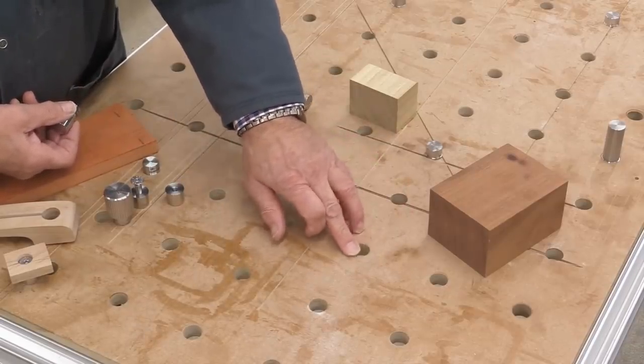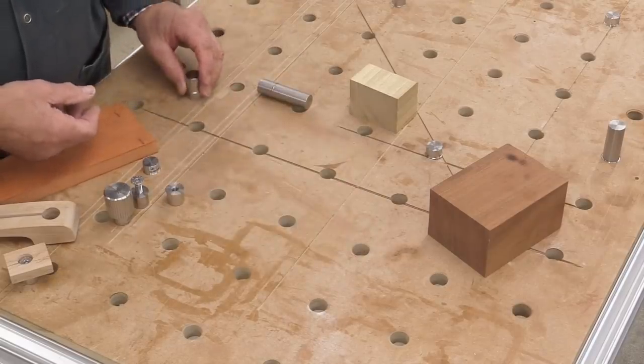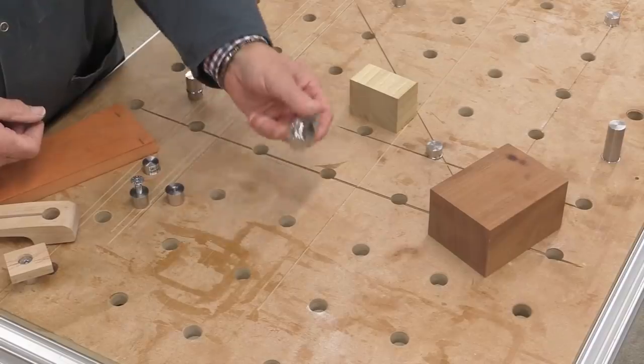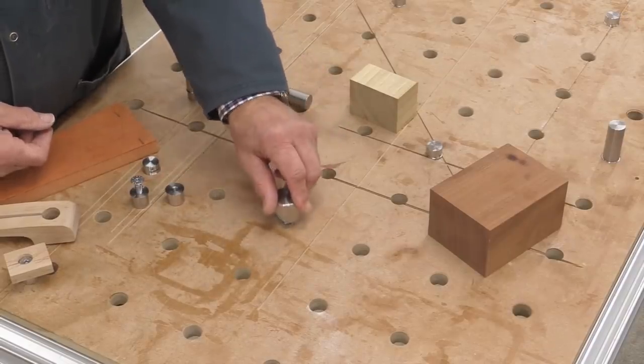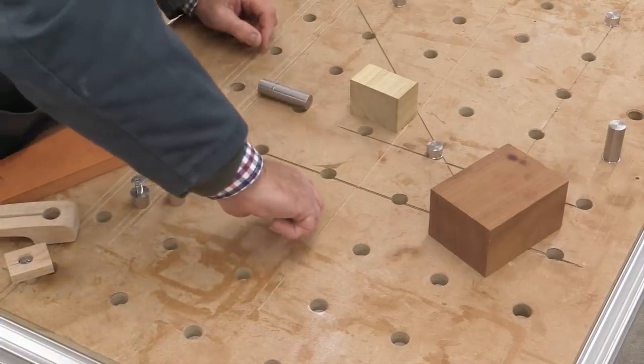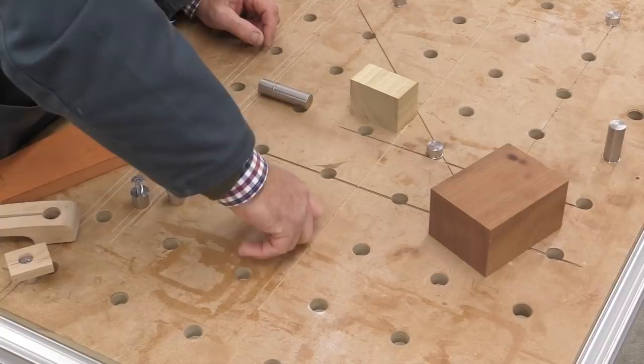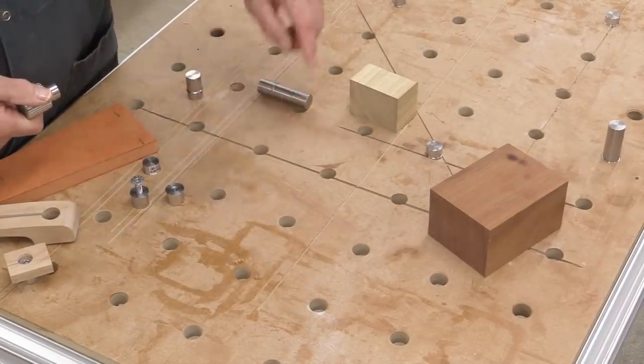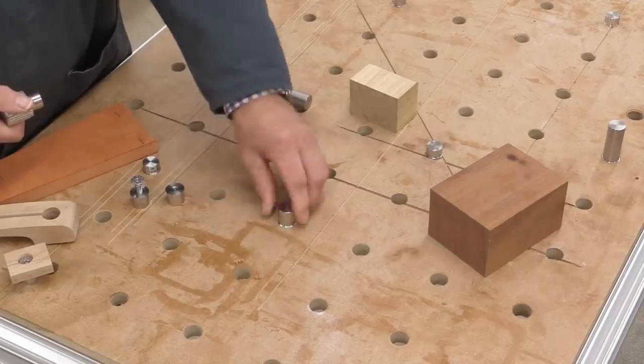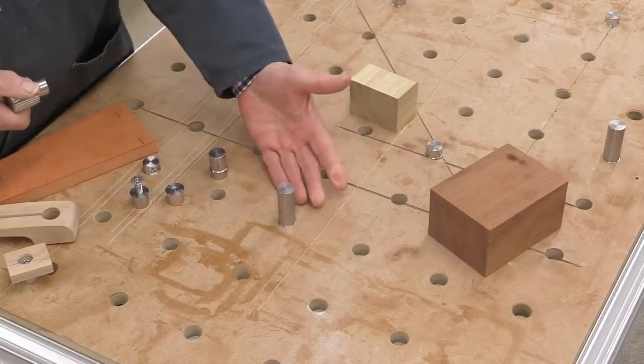But in order to create that chamfer, you would either use your router, if you're doing a lot of them, that might be an easy way. Or you can use the Parf chamfer tool, like this one. So it goes down into the hole, and you give it a few turns, and you can see there, I've created the chamfer. And that now means that the various dogs fit in very neatly, and they'll be vertical.